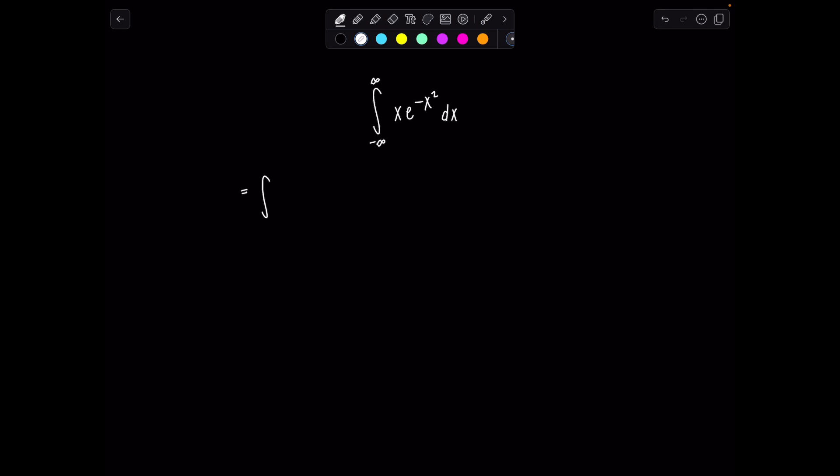So we're going to rewrite this as the integral from negative infinity to zero of x e to the negative x squared dx plus, and then I have to pick up where I left off, so zero to infinity, and then again, x e to the negative x squared dx. I'm going to call this integral number one, and then integral number two. We're going to do them separately.